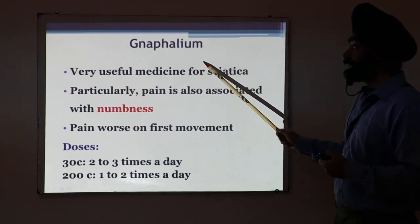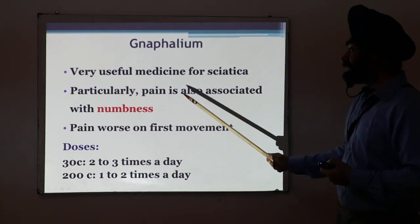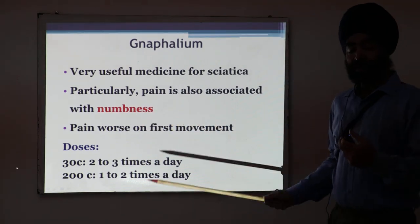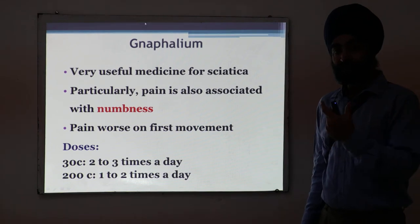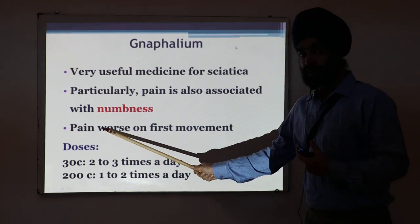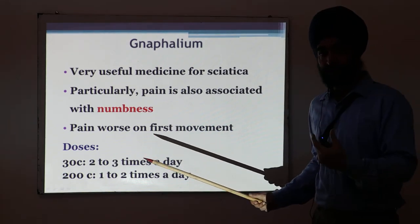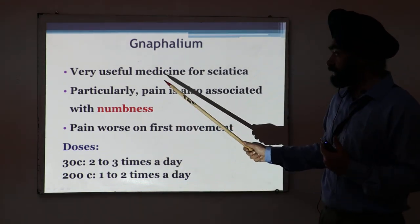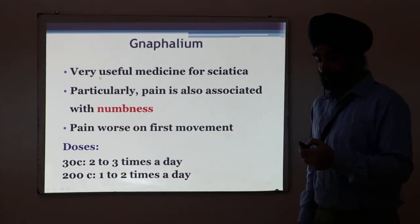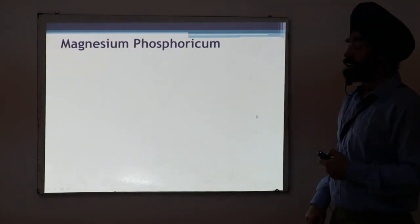The third medicine is Gnaphalium — very useful in sciatica pain, particularly when there is pain accompanied by numbness. Pain along with numbness is a very strong feature for Gnaphalium. Another important feature is that the pain is worse on first motion — when the person first tries to move, it produces a lot of pain. Dose: 30C or 200C.